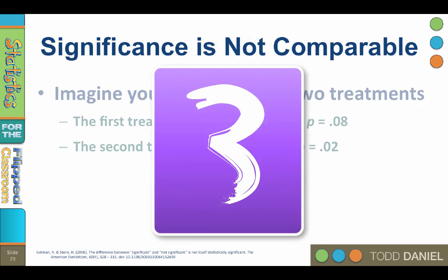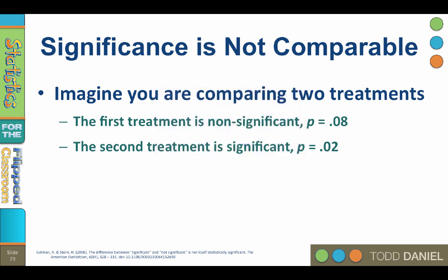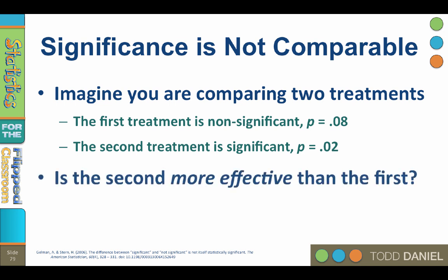Number three, statistical significance is not comparable. Imagine that you are comparing two treatments to a control group. The first treatment did not produce a statistically significant difference, P equals 0.08. The second treatment did produce a statistically significant difference, P equals 0.02. Should you conclude that the second treatment was more effective than the first treatment because it was significant and the first one was not? No.